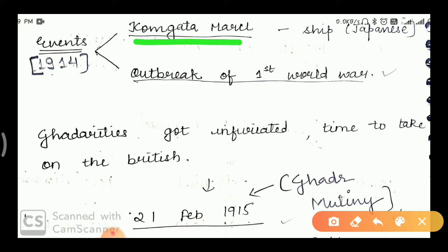The destination was Canada. When the ship reached Canada — which is a British colony — the Britishers forced them to leave. The Indians were not allowed to enter. They were held in the harbor, sitting in the ship. The British authorities said they would not be allowed to land in Canada, suspecting that they were nationalist leaders planning revolutionary activities. So around 2 months of time, they sat in the ship with no source of food and water.